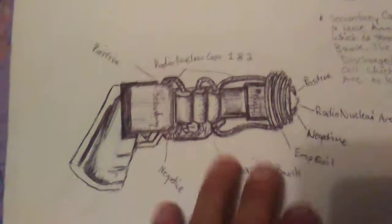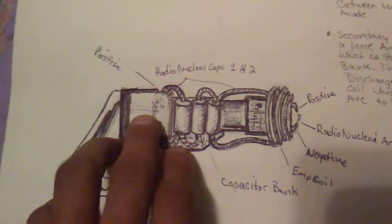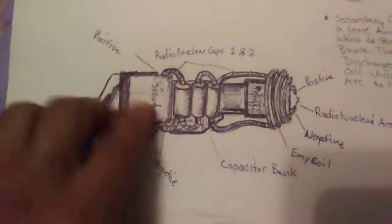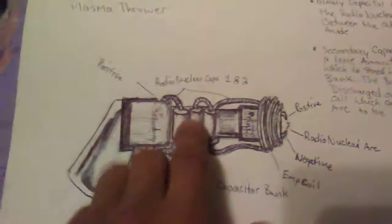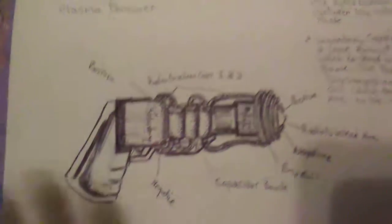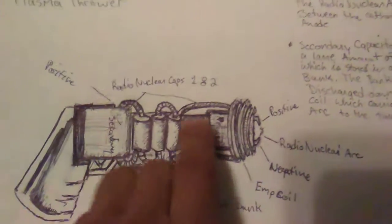I figured this to be like a plasma thrower or lightning gun. You obviously have your radio nuclear capacitor right here and you're getting energy from it in this capacitor bank. This is just a little rudimentary drawing here, this is your capacitor bank.